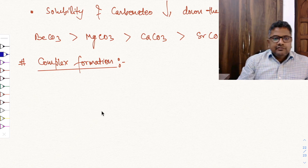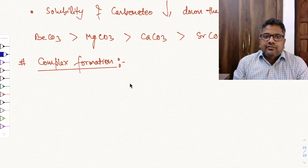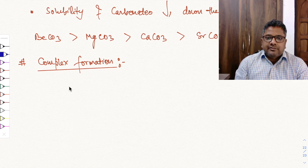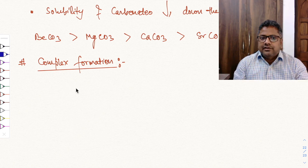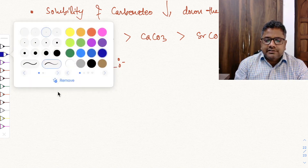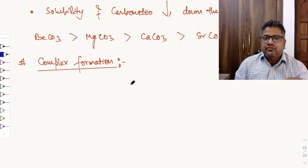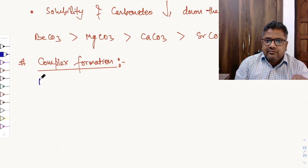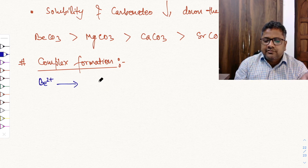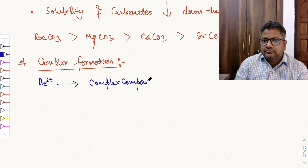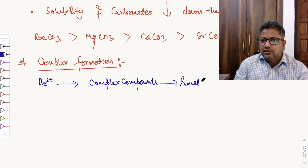Although complex formation is characteristic of transition elements, some smaller ions of the s-block can also form complexes. Beryllium (Be2+) forms complex compounds due to its small size. The complexes are of the type Be4O(R)6, where R may be acetate (CH3COO−), formate, or benzoate.